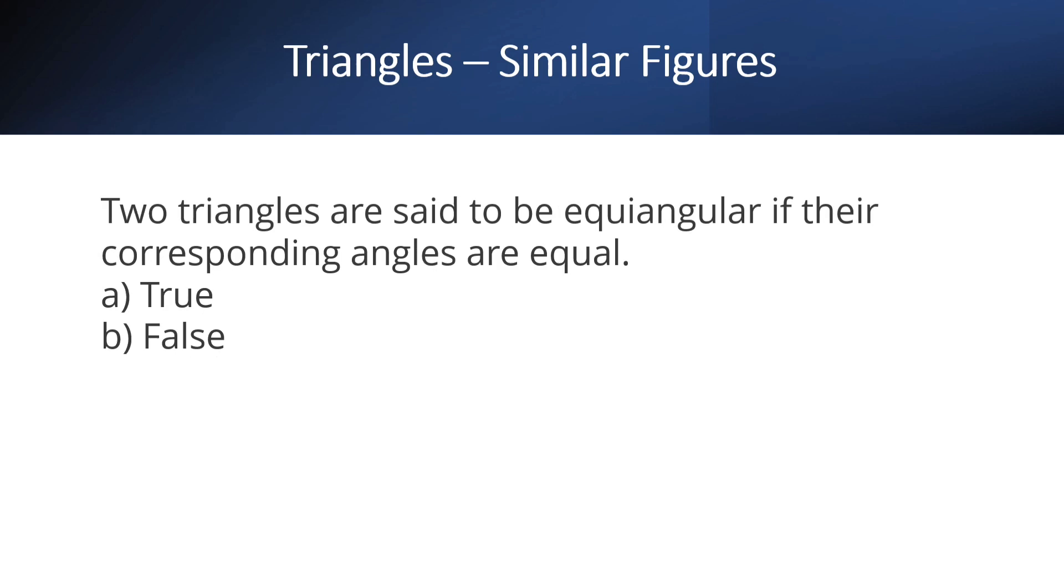Two triangles are said to be equiangular if their corresponding angles are equal. In this triangle, angle B is 30.